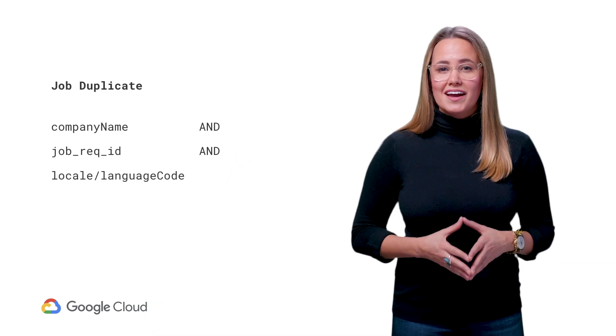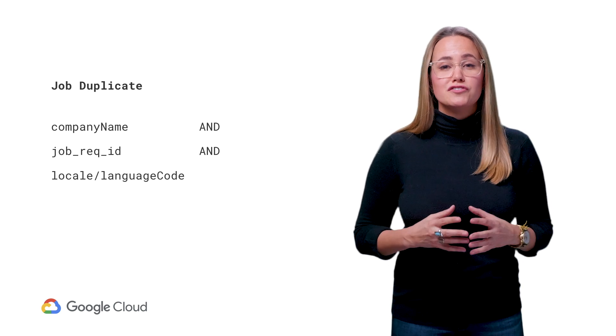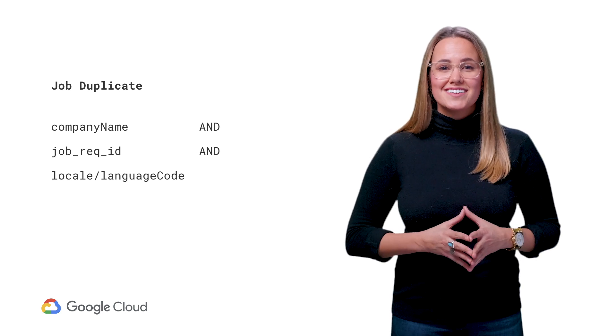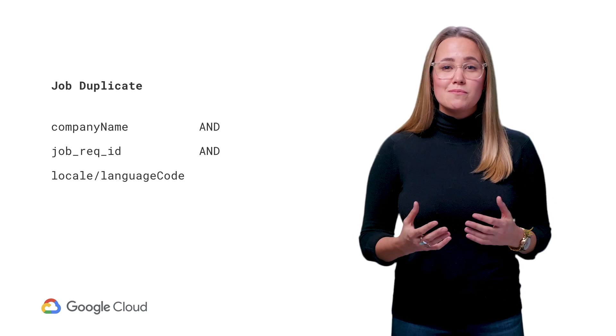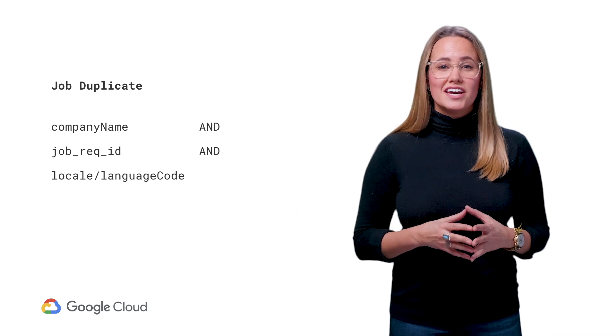Make sure you do your best to avoid uploading duplicate jobs. While the API has protection to make sure nearly identical jobs don't show up next to each other, it's still a poor user experience to see the same job listing multiple times. When creating a job in the API, it automatically gets rejected if it's not unique according to a few parameters. Two jobs can't share the same combination of company, requisition ID, and location.